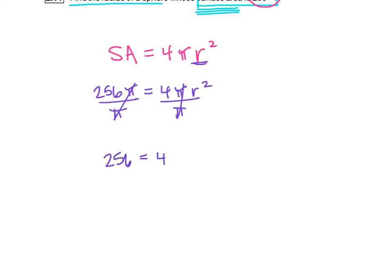256 equals 4r². Alright, so now we're going to work on solving for the r. We've got that 4 in front, so we're going to divide by 4. 256 divided by 4 is 64, is equal to r².